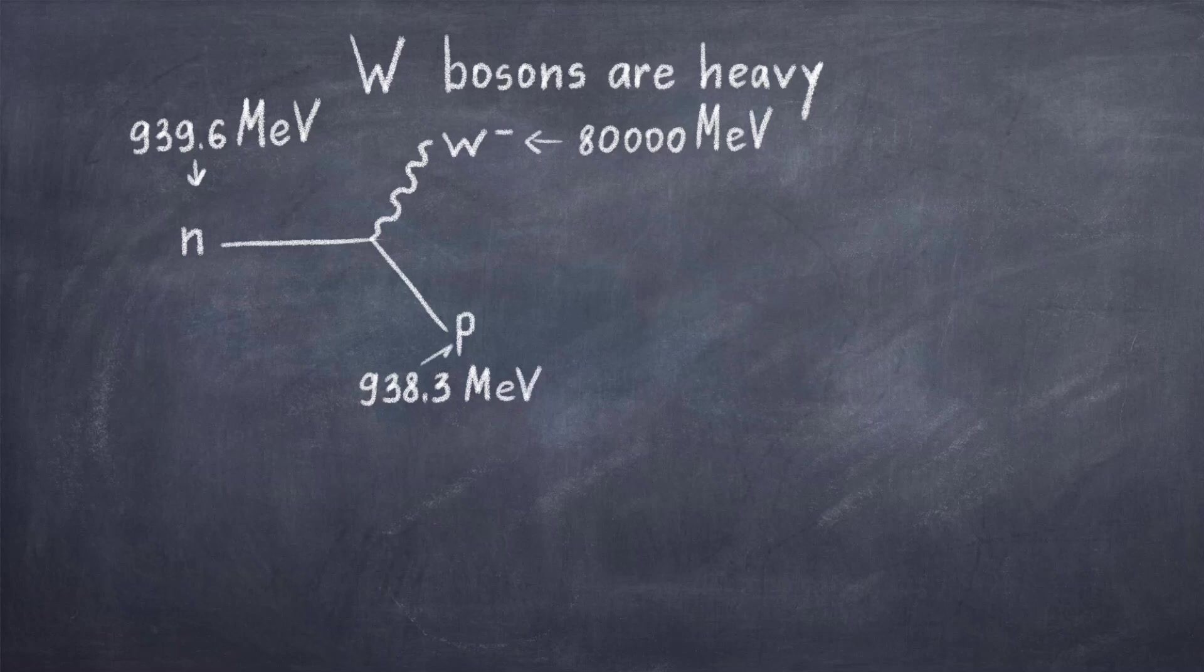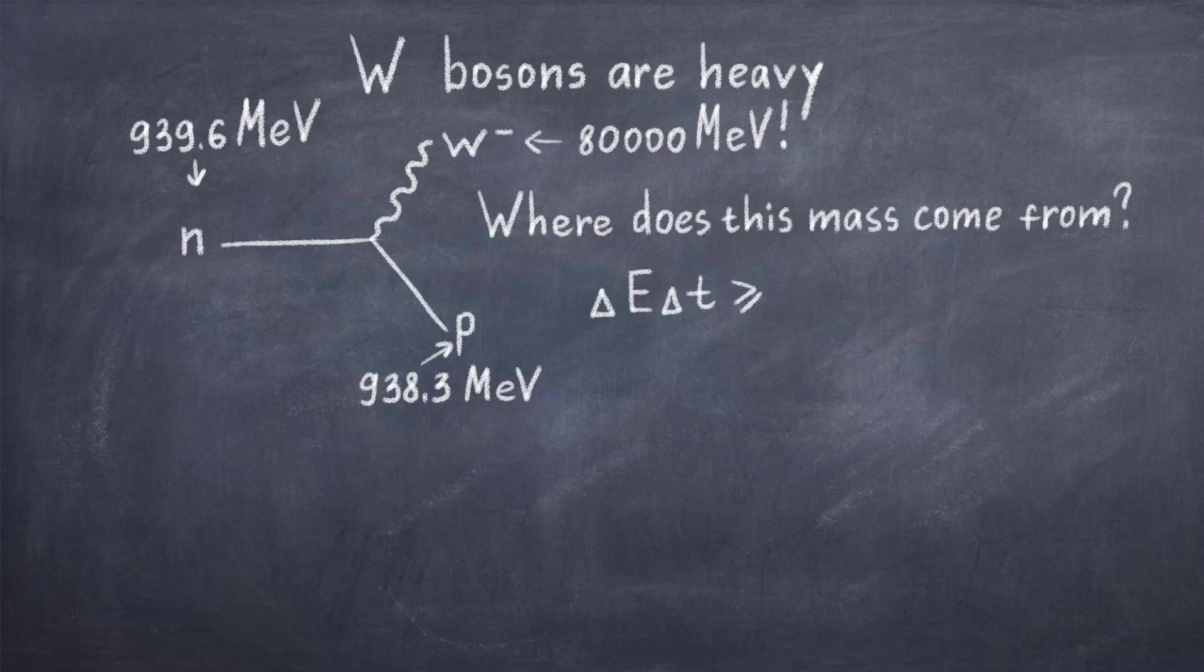This is where the uncertainty principle comes into the picture, where the uncertainty in E times the uncertainty of T is greater than h-bar over 2, where we have the uncertainty of energy and time, this is the limit of what we can measure. What this tells us is that there is a limit of how well we can know the mass of the W boson for some very small time interval.